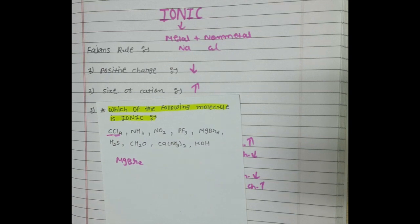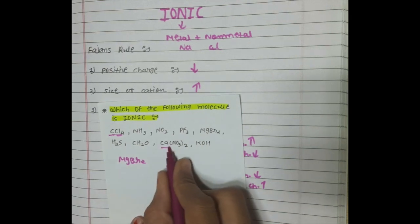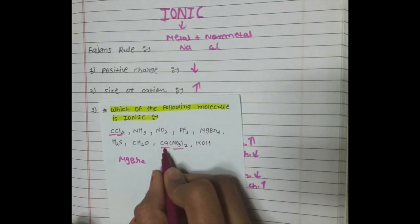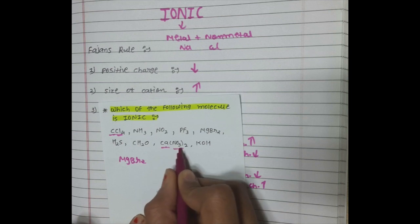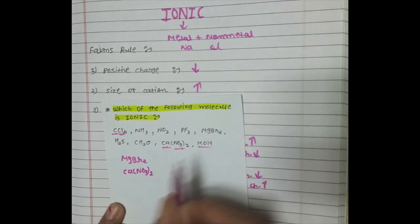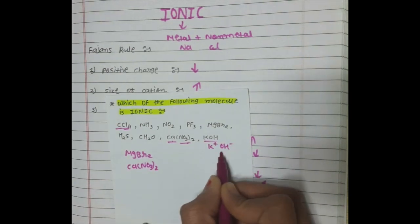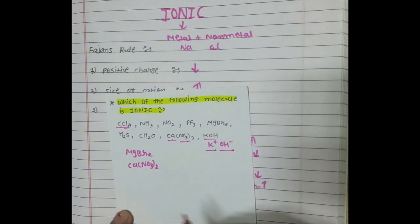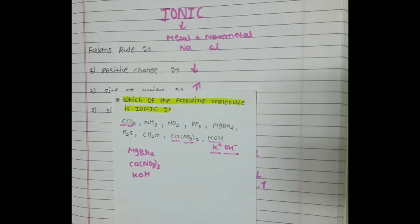H₂S — sulfur and hydrogen are both non-metals, so covalent. CH₂O — any organic molecule, mostly organic molecules are covalent because they are made up of carbon and hydrogen, so covalent. Ca(NO₃)₂ — Ca is a metal and NO₃ is a non-metal, so metal + non-metal gives ionic. KOH — K⁺ is metal and OH⁻ is non-metal, so KOH is ionic. That is how we find out which is ionic and which is covalent.